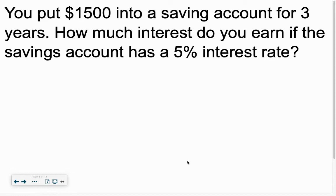Let's do that. You put $1,500 into the savings account for three years. How much interest do you earn if the savings account has a 5% interest? Money into the bank means when we use our friend, IPART. Now, we go down the line.